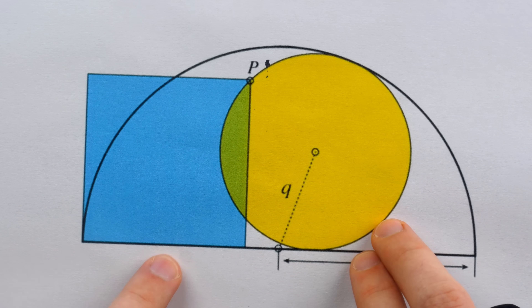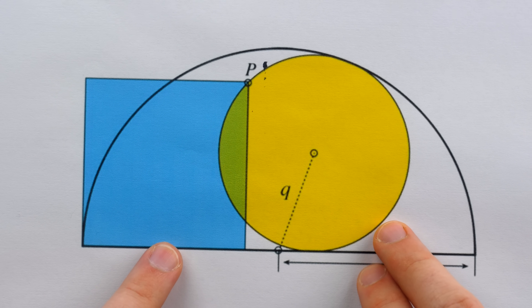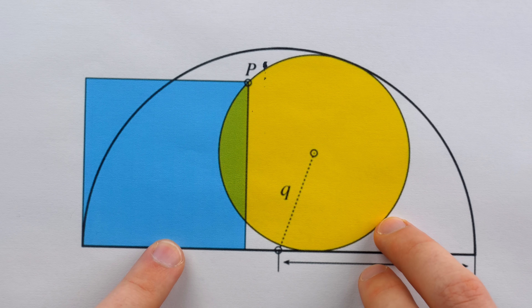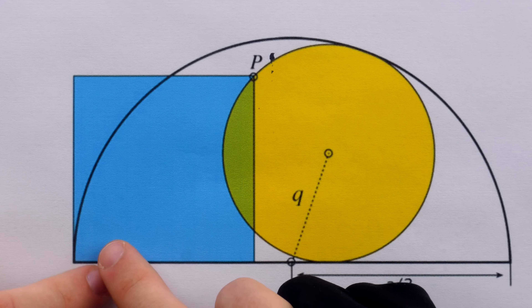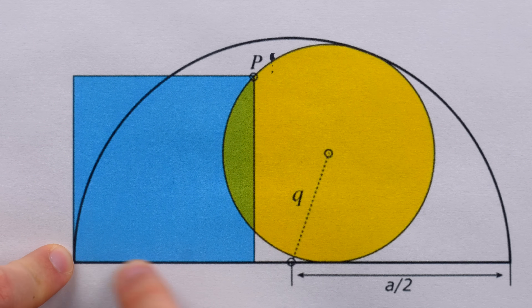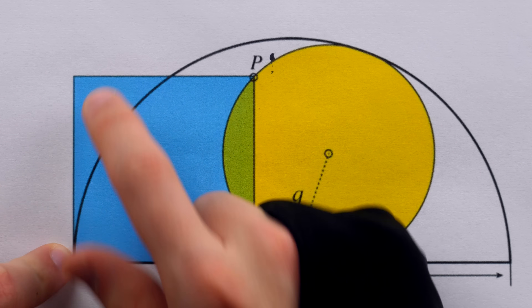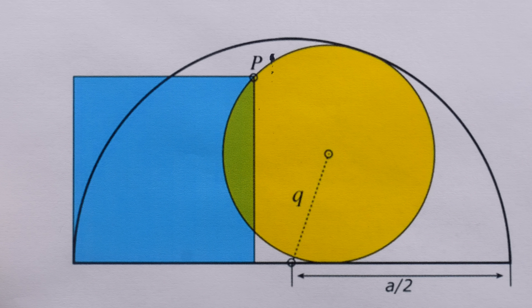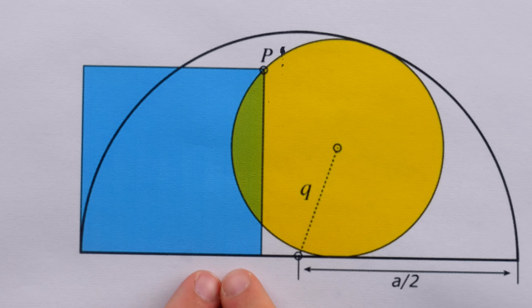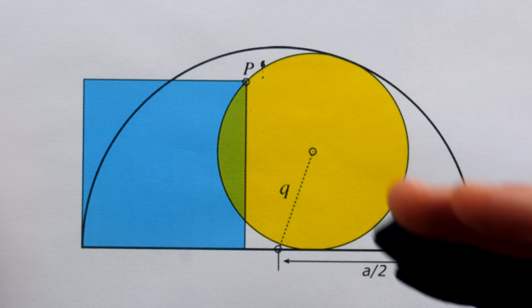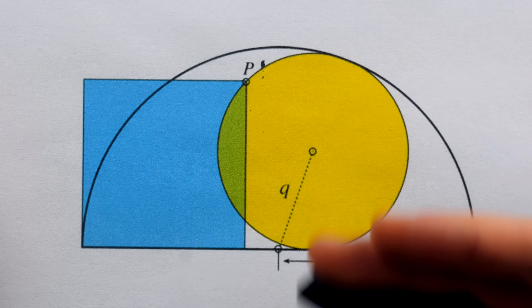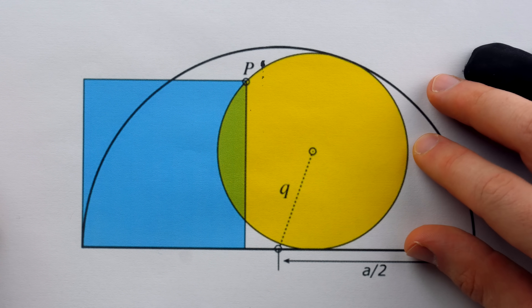It's time for another fun geometry puzzle from Archimedes Lab. I'll leave a link in the description to the original puzzle. Our objective is to find the area of the blue square and to express it in terms of A, the diameter of the semicircle. Specifically, we're challenged to do so without using trigonometry.